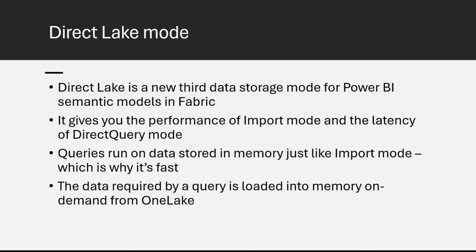There is also a property on the semantic model you can set if you've got Tabular Editor, called the Direct Lake behavior mode. If you don't change it, automatic is what we've just seen—you start with the Direct Lake semantic model and it falls back as necessary. You can set this property to Direct Lake only, which forces the engine to only use Direct Lake mode and will return an error if it can't—a nice easy way of checking if you're breaching any guardrails. You can also set it to direct query mode only, which forces the semantic model to use only direct query mode—a good way of testing what performance would be like if you had to fall back.